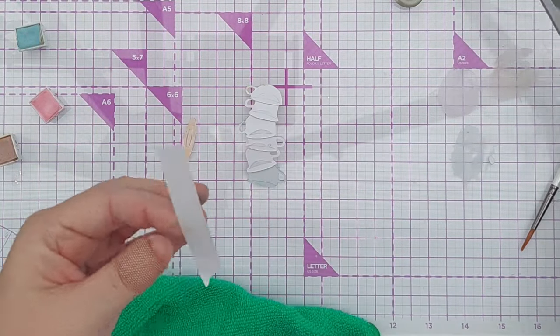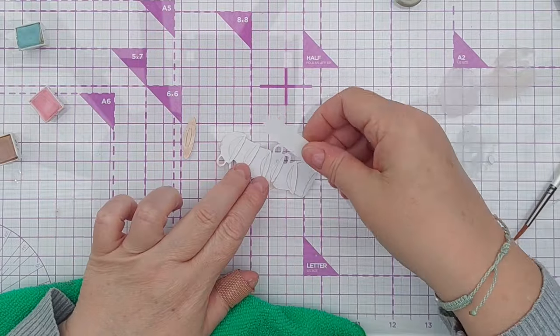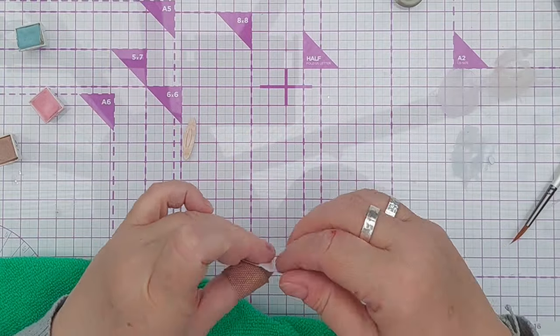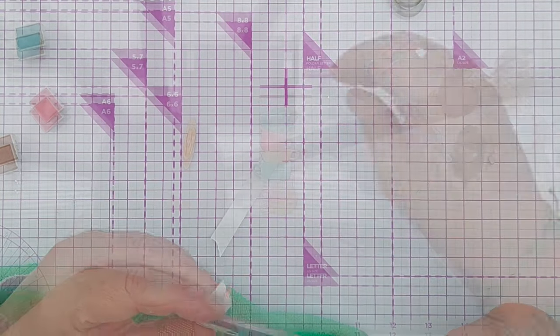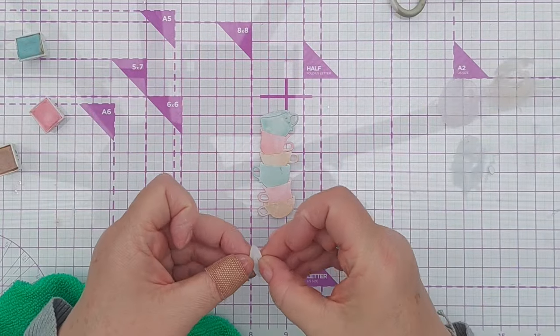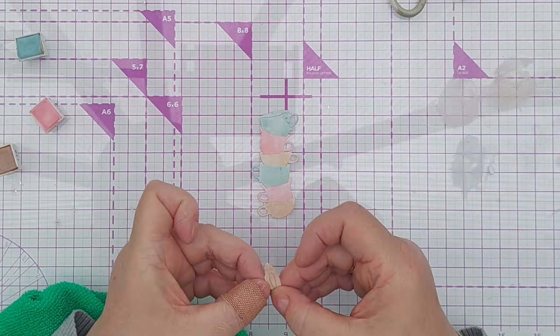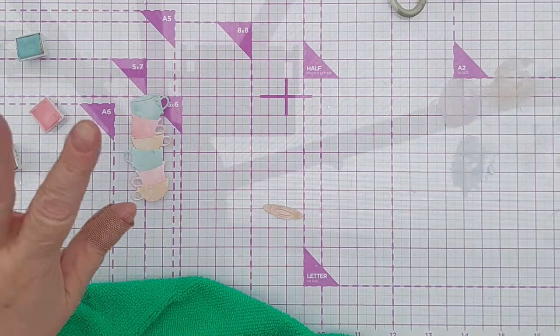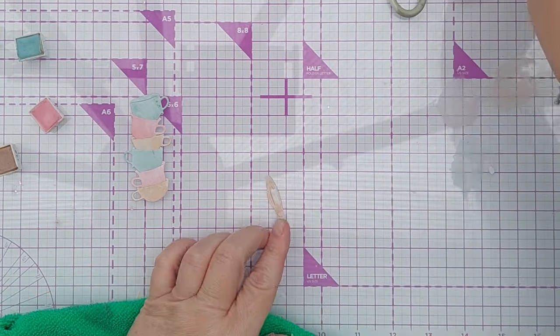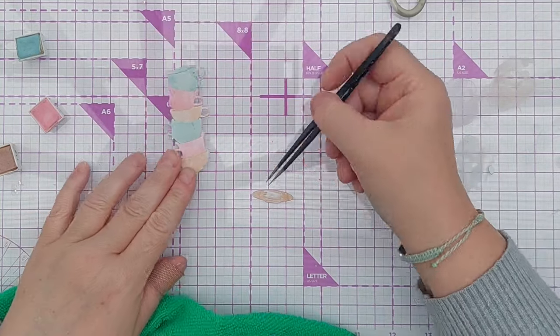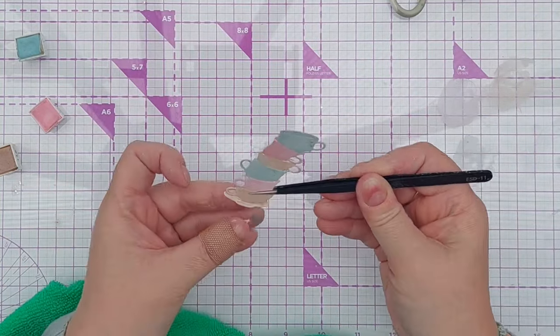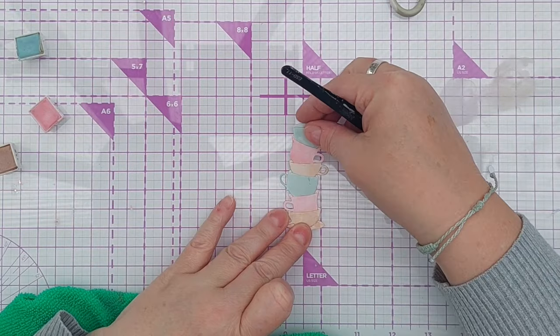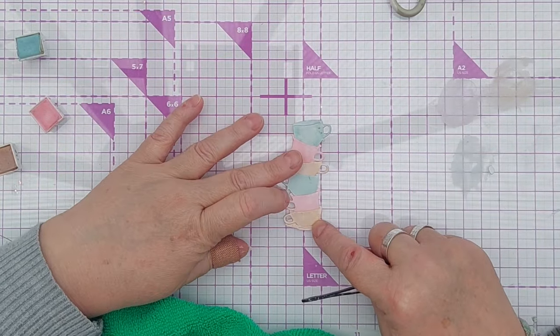Before I do anything else, I'm going to make sure that stays as it is by adding a strip of double sided down the back. I'm not going to take the release paper off yet. And I want to add the saucer as well. So I'm going to pop a bit of glue on the back of my saucer. Where it's going to be hidden by my cups. And tuck that cup in there. I like that. So if the saucer is flat, then we've got a nice gravity defying pile of cups.